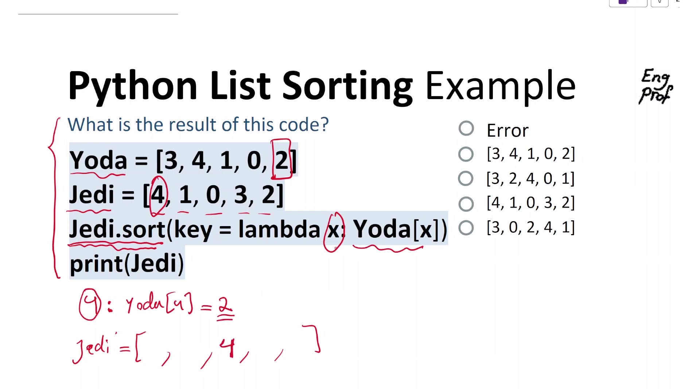Now, next we pick 1 and look at Yoda[1]. As you can see, it's 4. So that means 1 should go to position 4. So 4 went to 2, 1 goes to 4 and sits here.